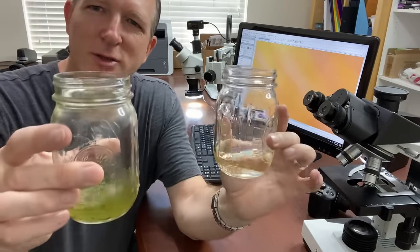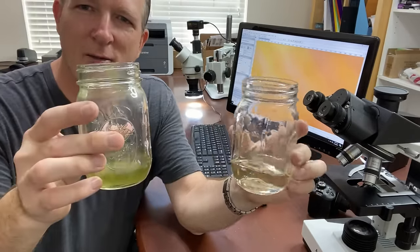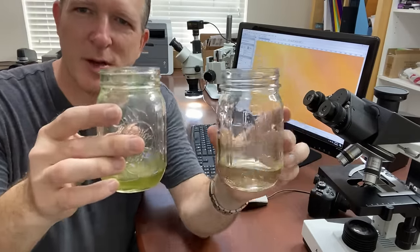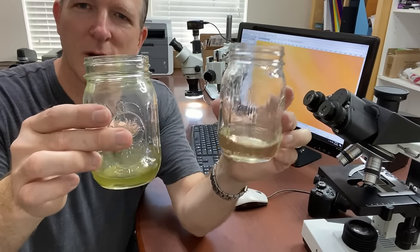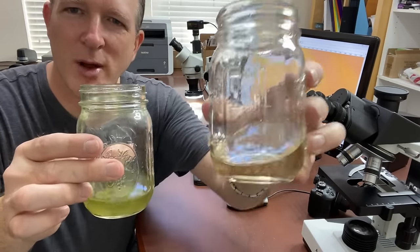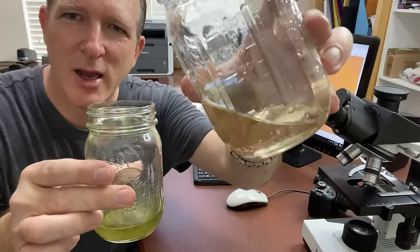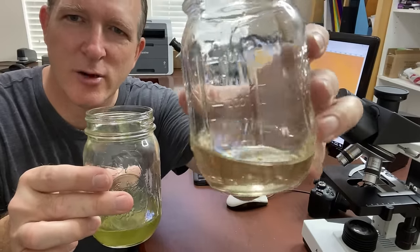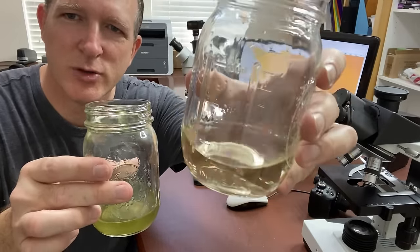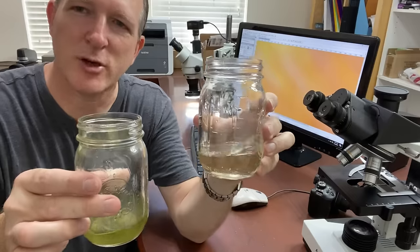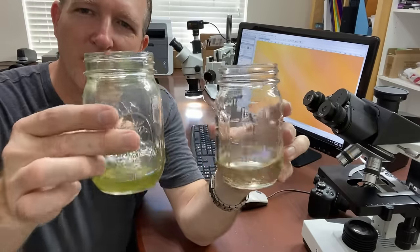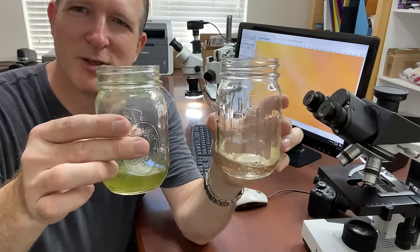All right, so here are the results and you can see that we have our filtered water here and our pond water here. Obviously a big difference, although I do see that there's still a tinge color in the water which will be interesting to see what that means under the microscope. But we'll go ahead and show both of these under the microscope and make that comparison.